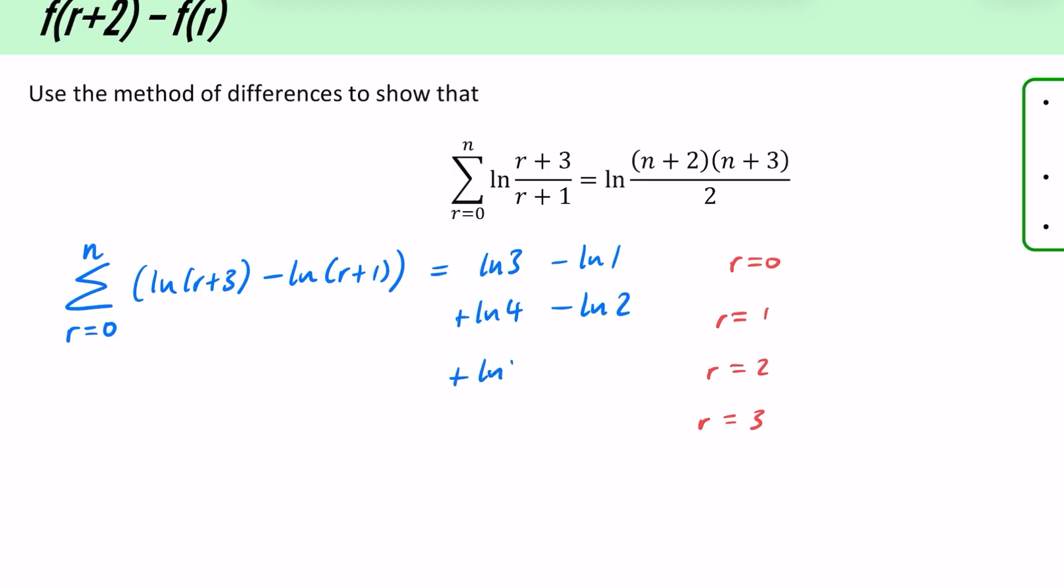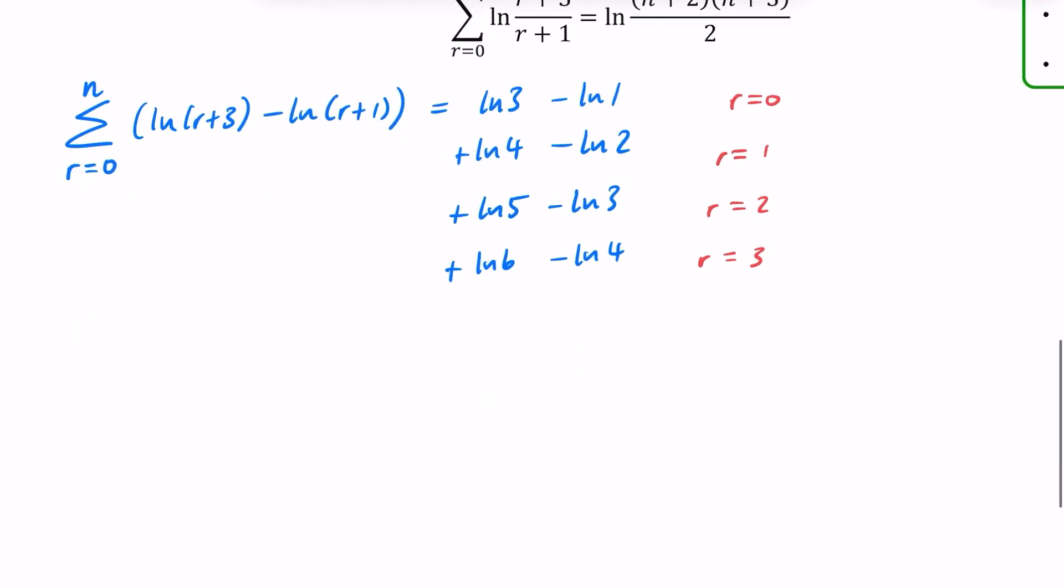When I do it with r equals 0, I just get ln(3) minus ln(1). When I do r equals 1, I'll do r equals 2 and r equals 3, and then we'll see if we've spotted the pattern then. So we would then have a ln(4) minus ln(2). For r equals 2, there would be a ln(5) and a ln(3). And for r equals 3, there would be a ln(6) and a ln(4). You probably don't need to do that many that I've just done there.